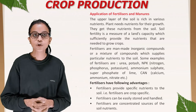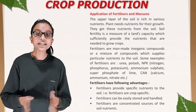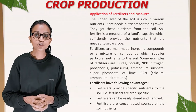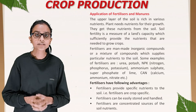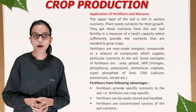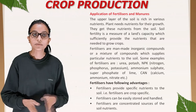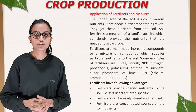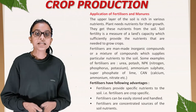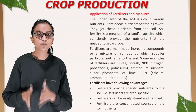Application of fertilizers and manures: the upper layer of soil is rich in various nutrients that plants need for growth. Soil fertility is a measure of land's capacity to provide nutrients needed to grow crops. Fertilizers are man-made inorganic compounds or mixtures that supply particular nutrients to the soil. Examples of fertilizers are urea, potash, NPK (nitrogen, phosphorus, potassium), ammonium sulfate, superphosphate of lime, and CAN (calcium ammonium nitrate).